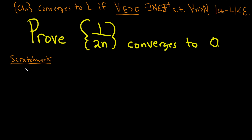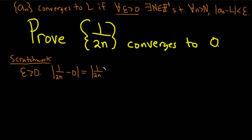We'll work backwards: we have epsilon greater than zero and we need an integer N such that the absolute value of a sub n minus L is less than epsilon. Our a sub n is 1 over 2n and our L is zero. Since n is bigger than a positive integer, the fraction is positive, so we don't really need the absolute values.